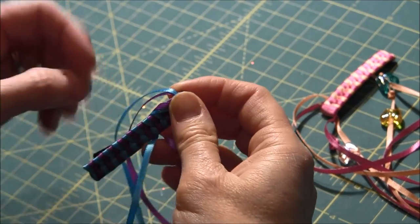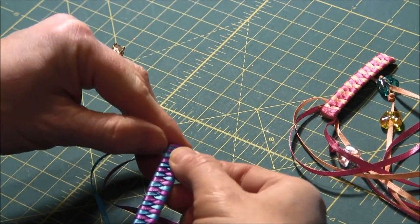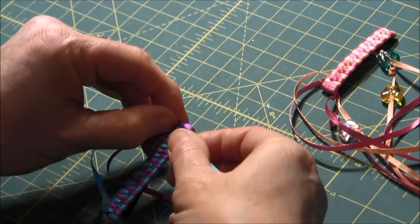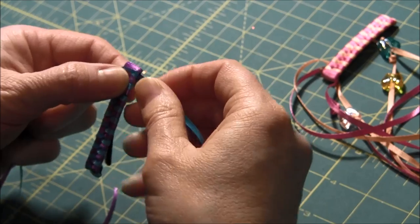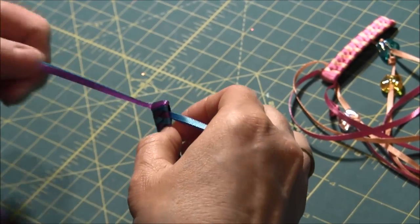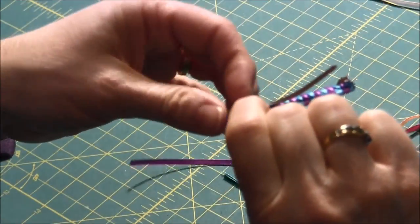And then I'll take the other side and wrap it also, wrap it around and I'm sliding it under the barrette.